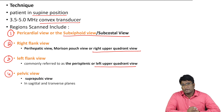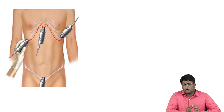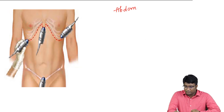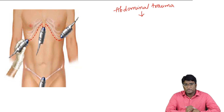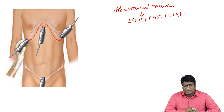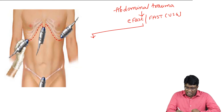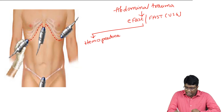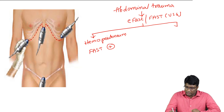The pelvic view is also called the suprapubic view to look for any pelvic hematoma. When you get a patient with blunt trauma abdomen, the first investigation we do is E-FAST or FAST — an ultrasound procedure. On FAST or E-FAST, if hemoperitoneum is detected, it is considered fast positive. If there is no hemoperitoneum, it is fast negative.